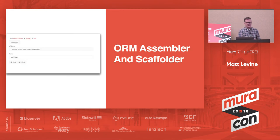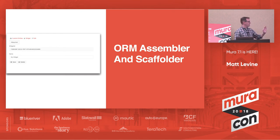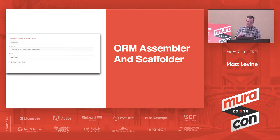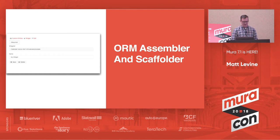Mira 7.1 has a new ORM assembler and scaffolder. It allows you to use the Mira admin to define Mira ORM entities that can then be accessed via Mira.js or the JSON API — so you don't actually need to get into CFML to define objects. You can define your objects right there in Mira's core. We're very excited about it and about where it can go in the future.